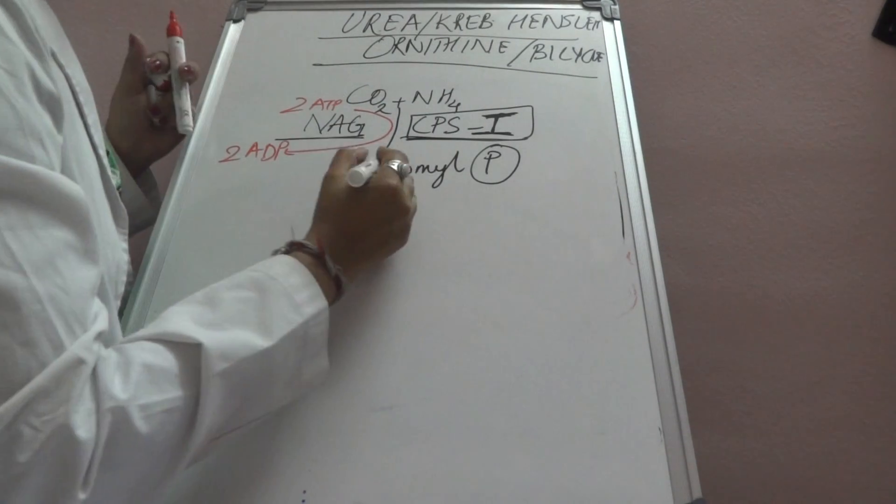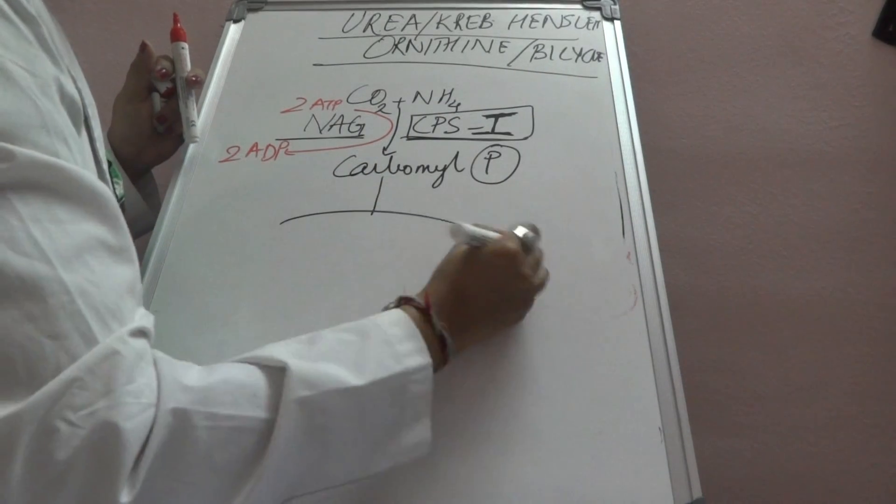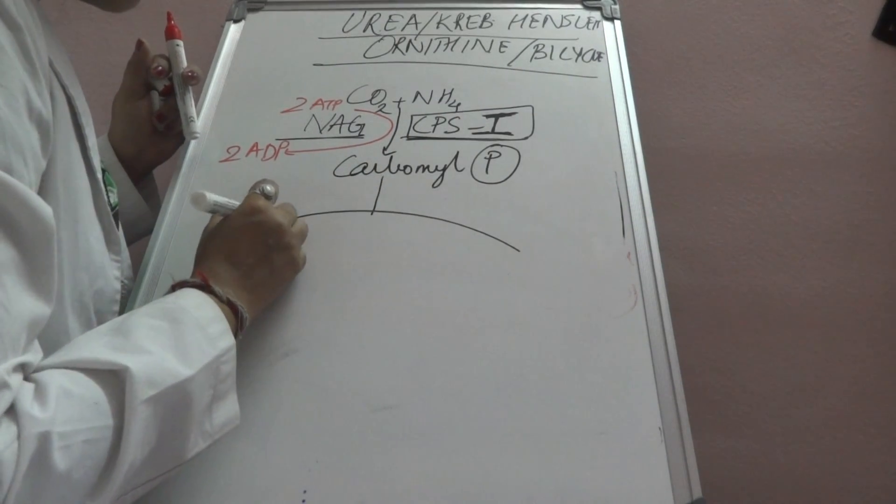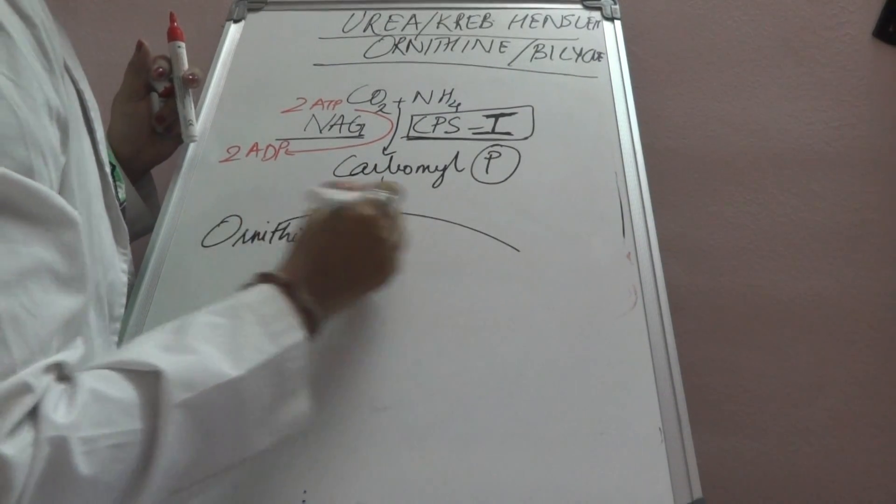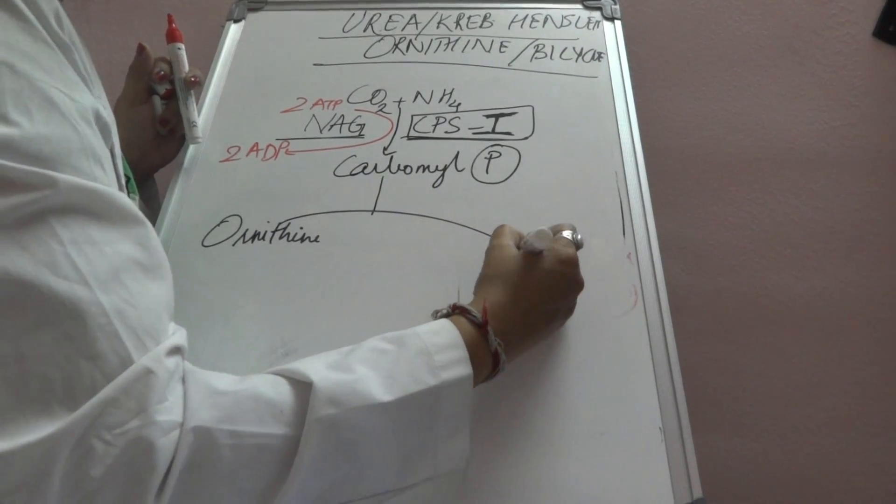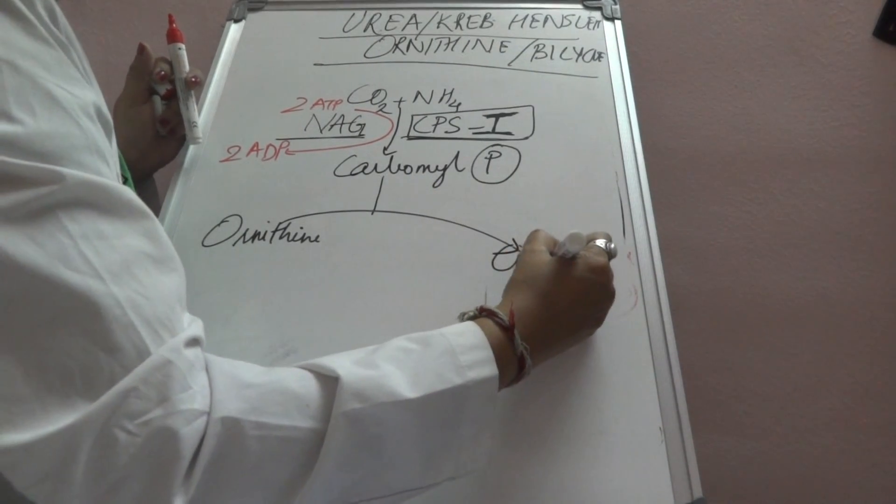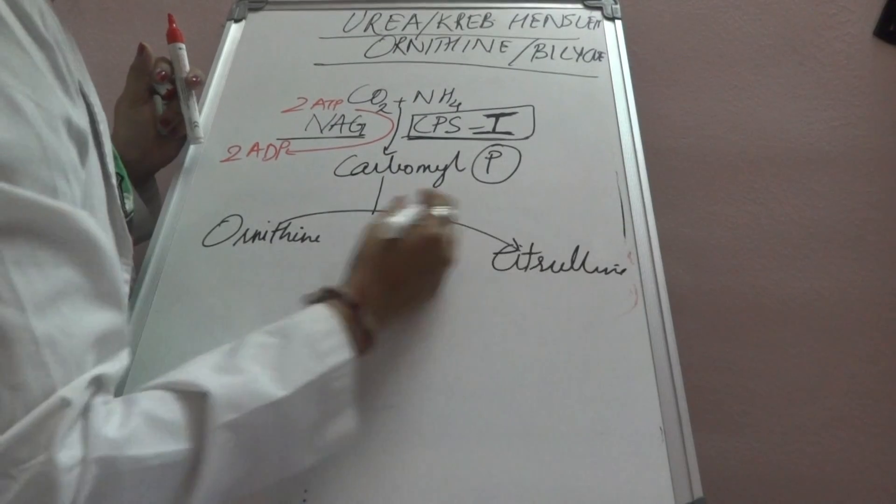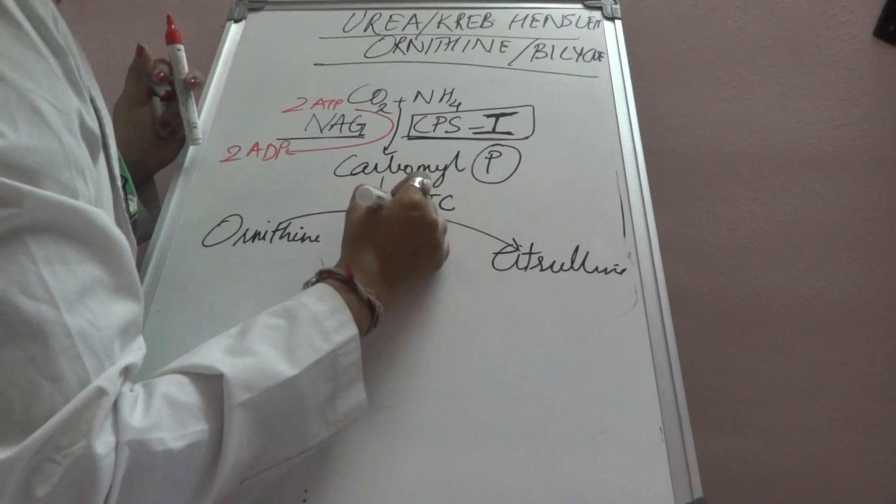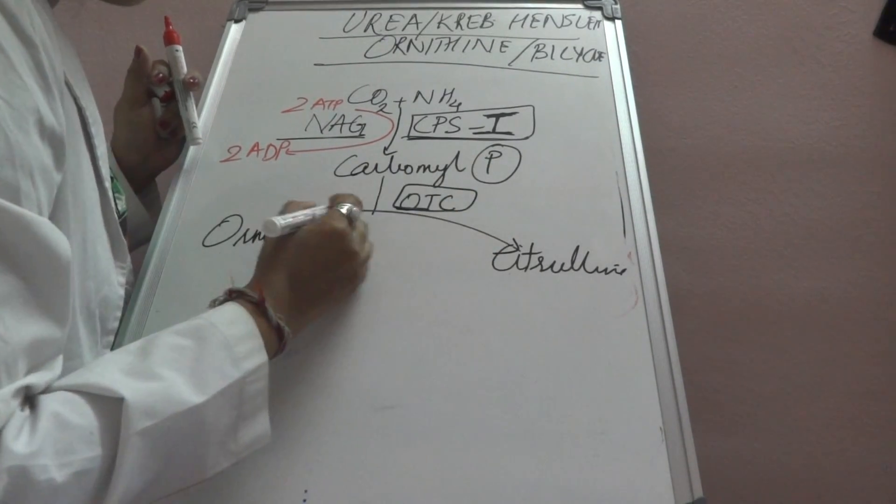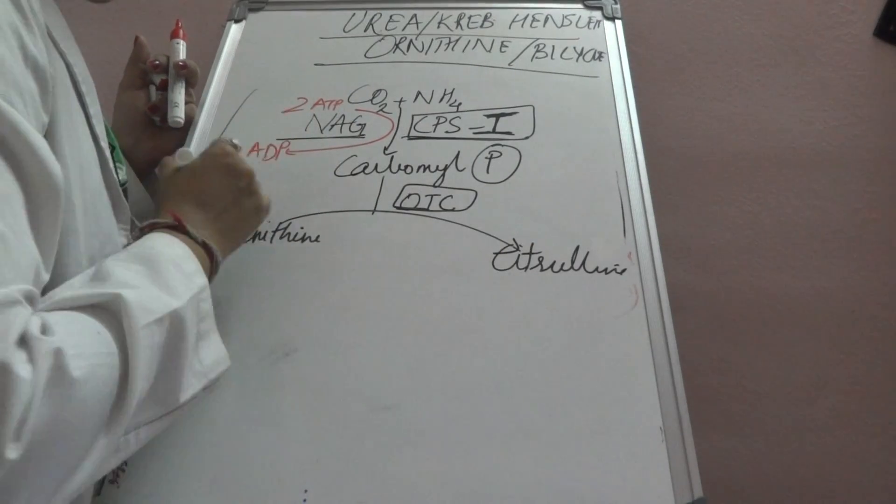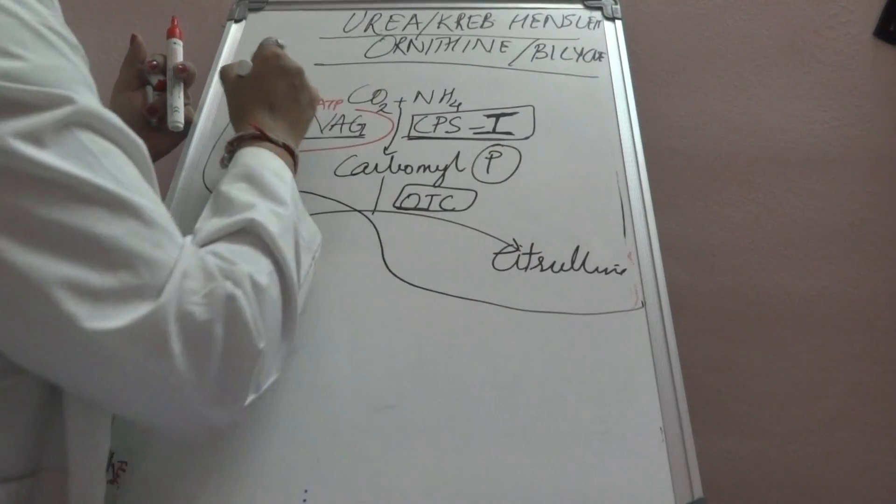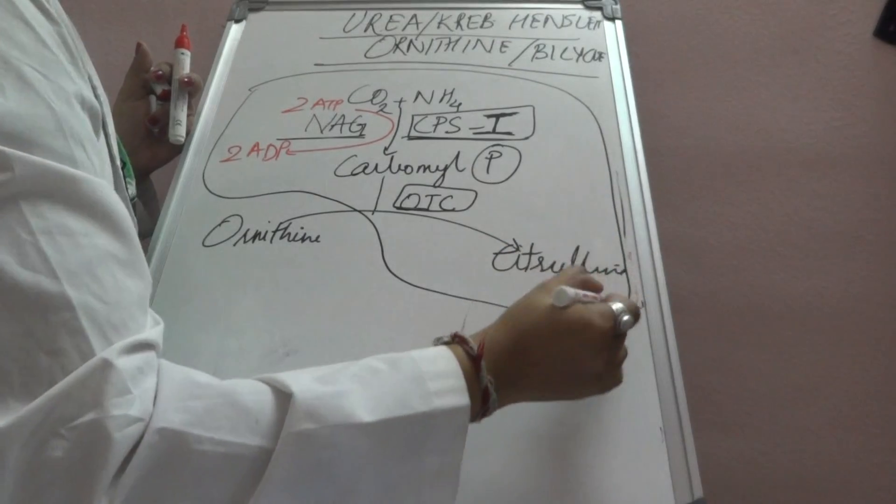Now the carbamoyl phosphate will react with ornithine to form citrulline. This takes place in the presence of ornithine transcarbamylase. This part of the reaction occurs in the mitochondria.